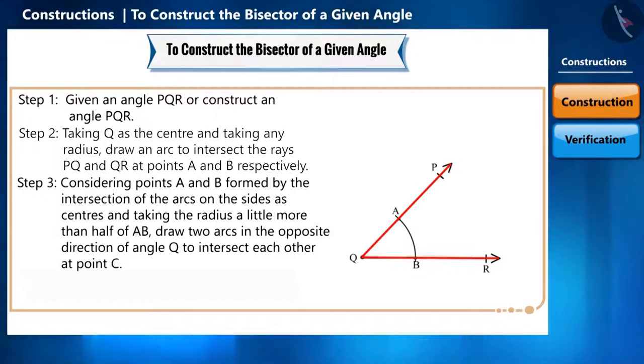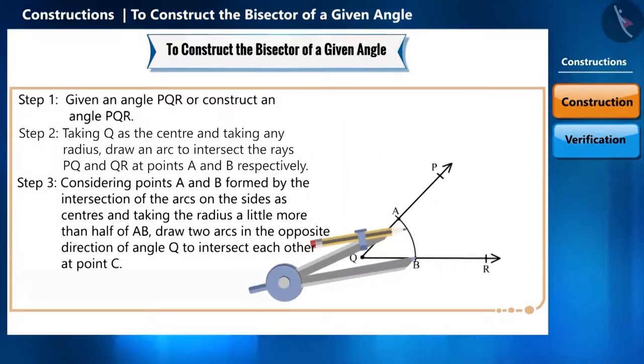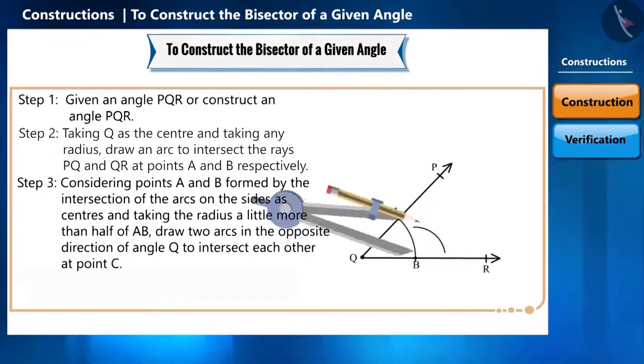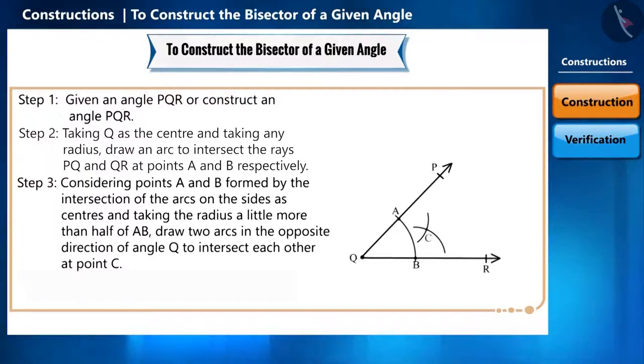Considering points A and B formed by the intersection of the arcs on the sides as centers and taking the radius a little more than half of AB, draw two arcs in the opposite direction of angle Q to intersect each other at point C.